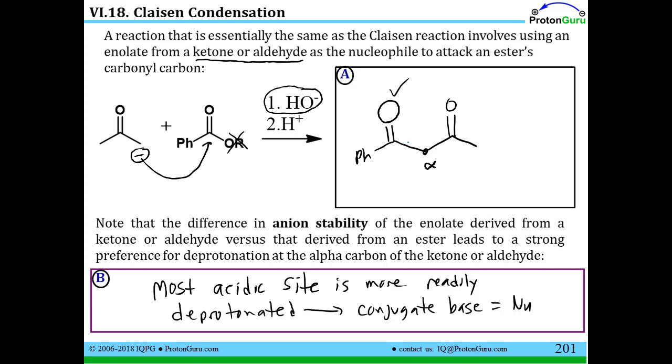And no matter what situation you're in where you have a base with carbonyls, remember that you're looking for the most acidic site to be most readily deprotonated. And it's that anion, that conjugate base that you generate that way, that will then serve as your nucleophile. So anytime you're faced with a case where you have the potential for different sites to be deprotonated, and here we didn't have that, we have a phenyl group, but even if this was an alkyl group, you look for the most acidic site, you deprotonate that, and use that as your nucleophile.